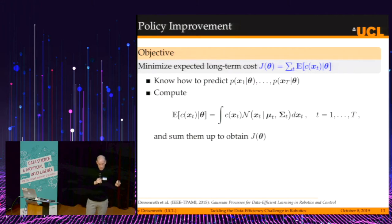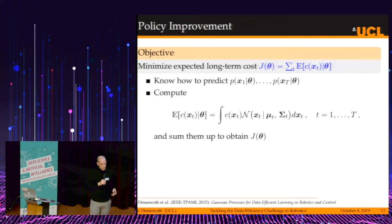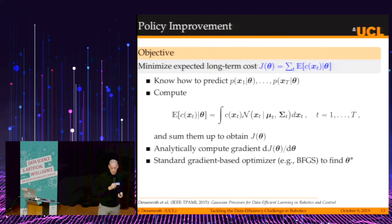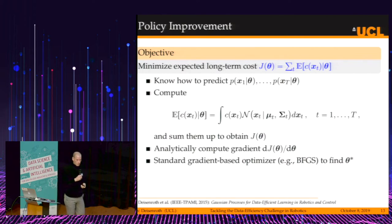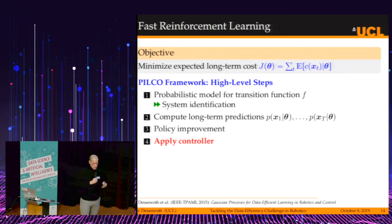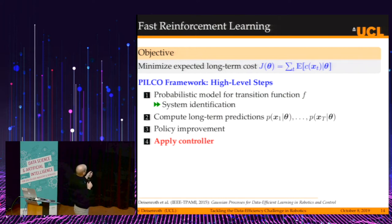One of the nice things is that we can compute an approximation to this cost in closed form — we can write a rather lengthy equation that gives us exactly this number. This also allows us to compute gradients of the cost with respect to the policy parameters, enabling standard gradient-based optimizers such as BFGS to find optimal policy parameters. Once we have an improved policy, we apply it to the real system, collect more data, and go through these four steps again.